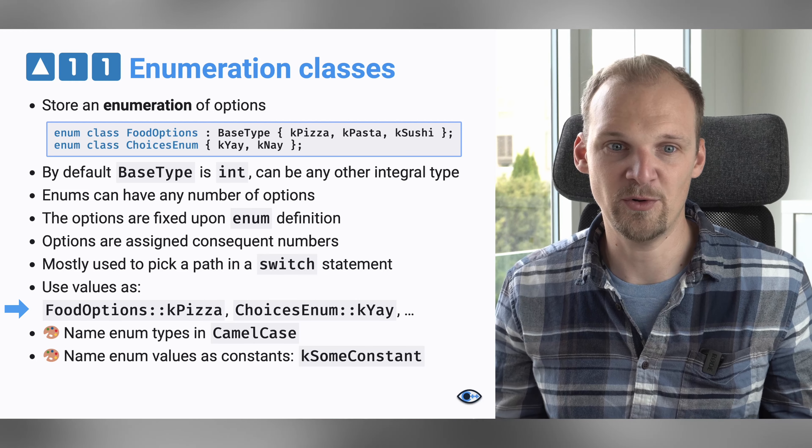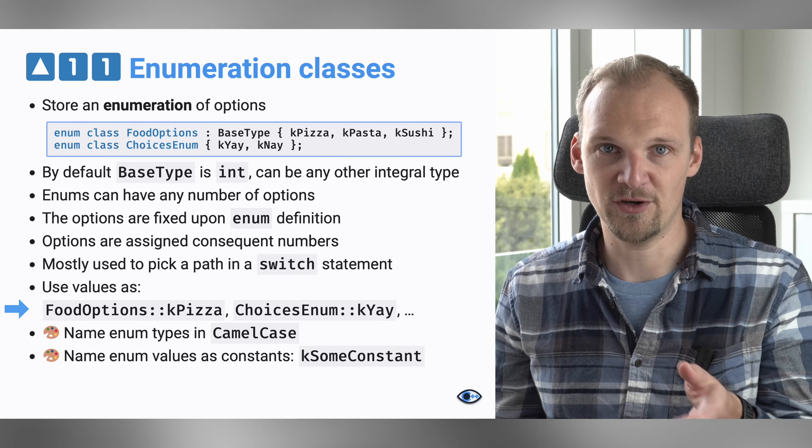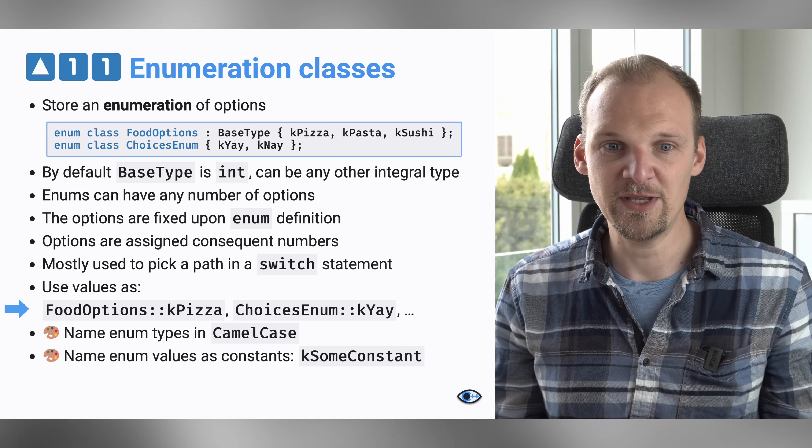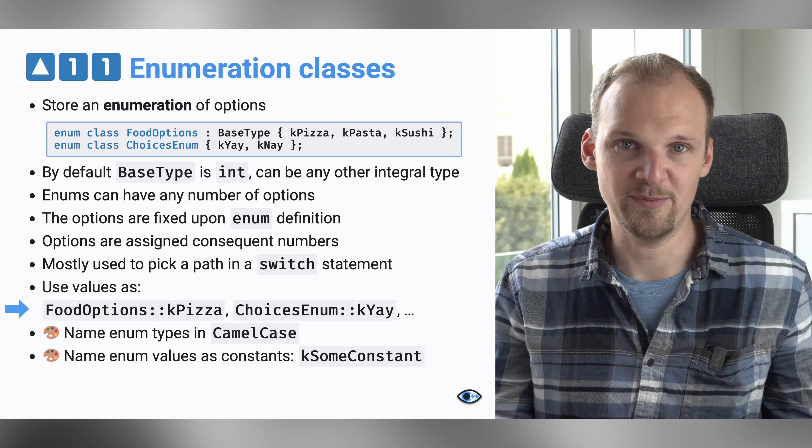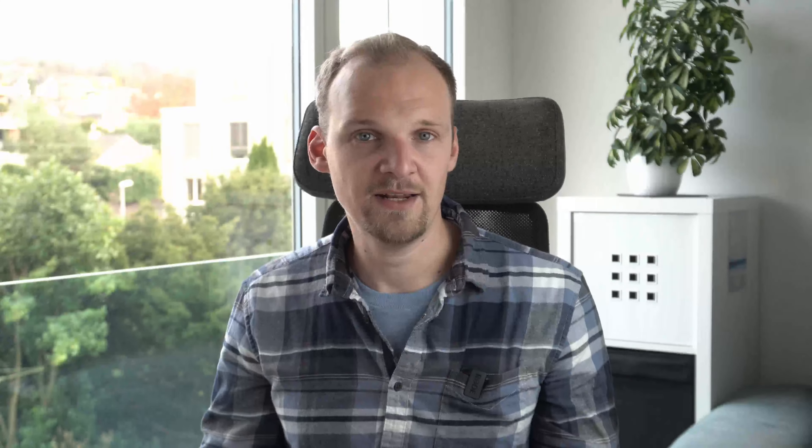For example, food option, four dots, and then kPizza will pick the pizza. As I said before, you usually name the types in camel case, and you name the options as if they're constants — camel case with the prefix of a lowercase k.